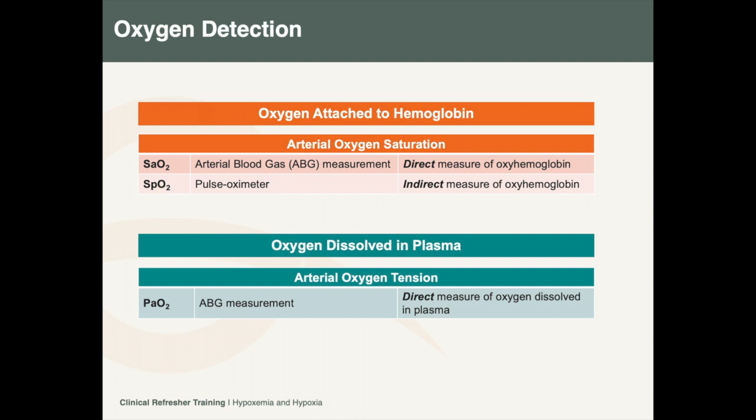Oxygen that diffuses from the lung alveoli into the pulmonary capillaries can be detected a number of ways. As the majority of oxygen binds to hemoglobin, the percentage of bound oxygen, or oxyhemoglobin, can be directly measured using arterial blood gas analysis, termed SaO2, or measured indirectly using pulse oximetry, termed SpO2.